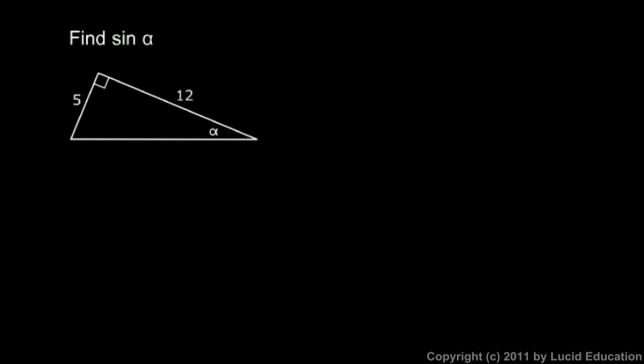And again that's an alpha - that font doesn't look great but that's supposed to be the Greek letter alpha - and that's this angle right down here. It doesn't matter how the triangle is oriented. In this case, the hypotenuse is here - like this is sitting flat on the floor or on the table resting on the hypotenuse. The right angle is up here. But the sine of alpha, or the sine of any angle, is always the opposite over the hypotenuse.